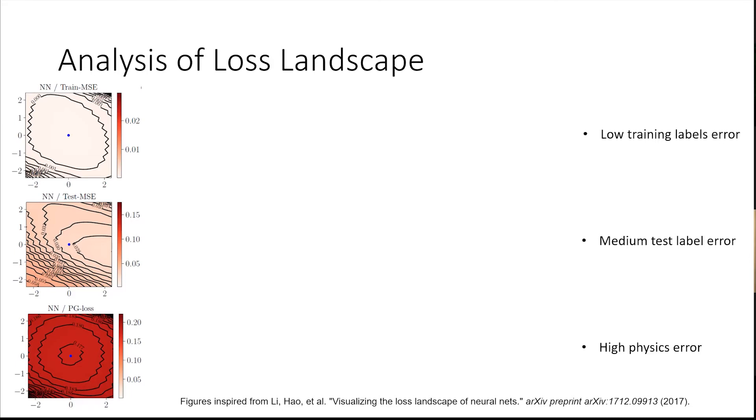In these figures the blue dot in the middle is the model we trained and the 2D landscape surrounding it is representing a cross section of the multi-dimensional space around the model. Obviously the lower the loss, the lower the color is, the better. Starting from a black box model we can see that using only the training MSE loss without any physics constraint, the training data is well fit here but the test data not as well fit, it's not really a minima and the PG loss is really high.